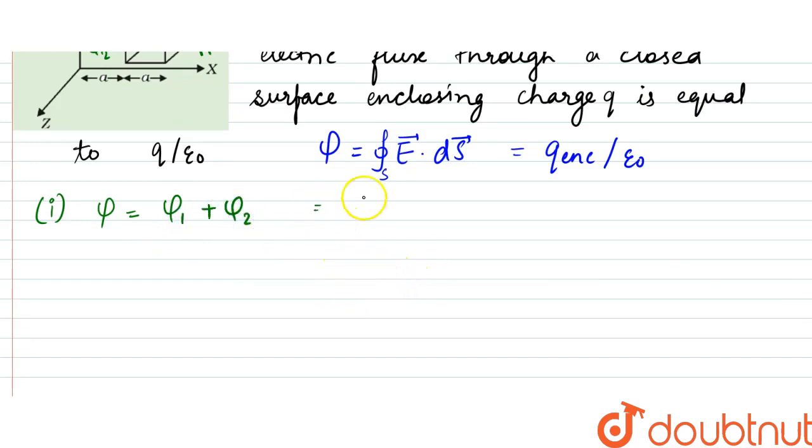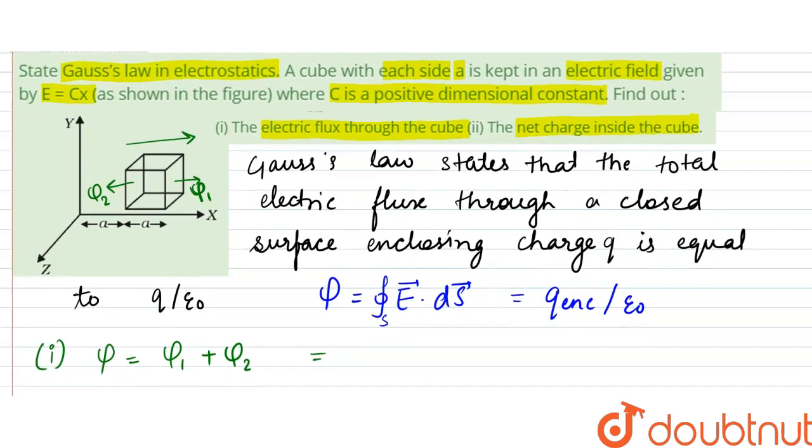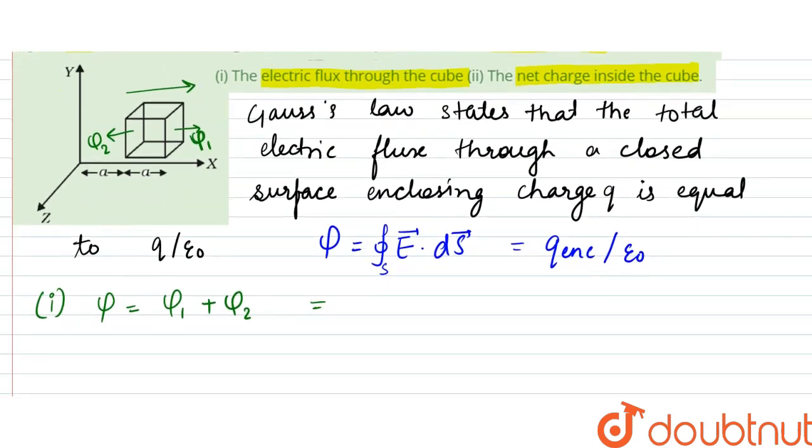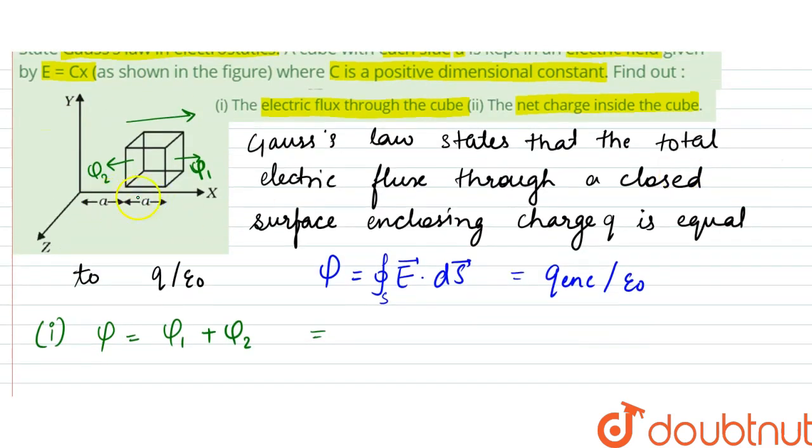So phi 1 would be equal to E dot dS. Since flux equals E dot dS, and from here we can see they are parallel, so the angle is 0. So it is Cx, the distance is 2A. So it will be 2AC into the area which is A squared, and cos theta is 1, plus phi 2.